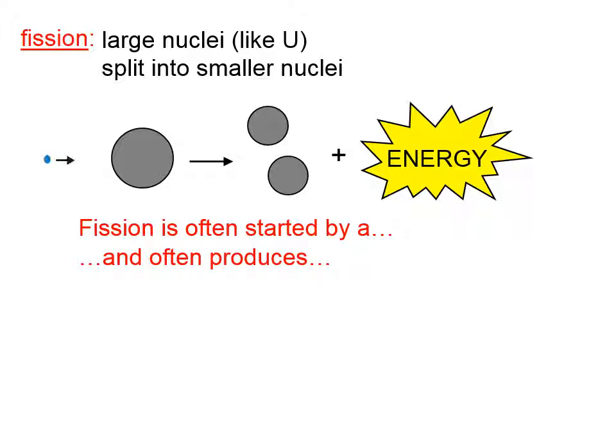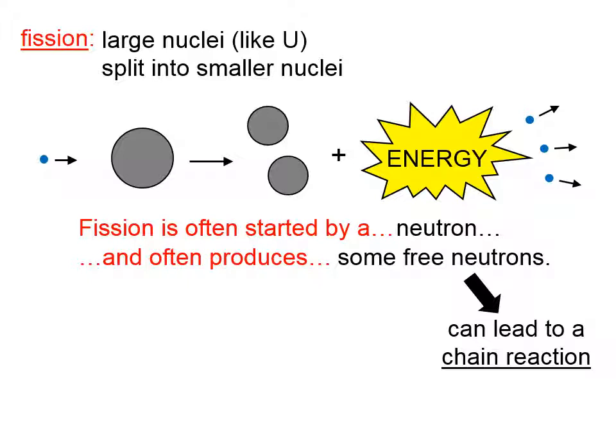Fission is often started by an initiator, like I've drawn here on the left side of the screen. I'm circling it with my laser pointer, and that initiator is a neutron. In particular, a slow-moving neutron is better. Fission often produces some free neutrons, and I'm going to draw these on the right side of the screen. There they go. I drew three of them. What do you suppose those free neutrons can do to other uranium atoms nearby? That would be start a chain reaction.